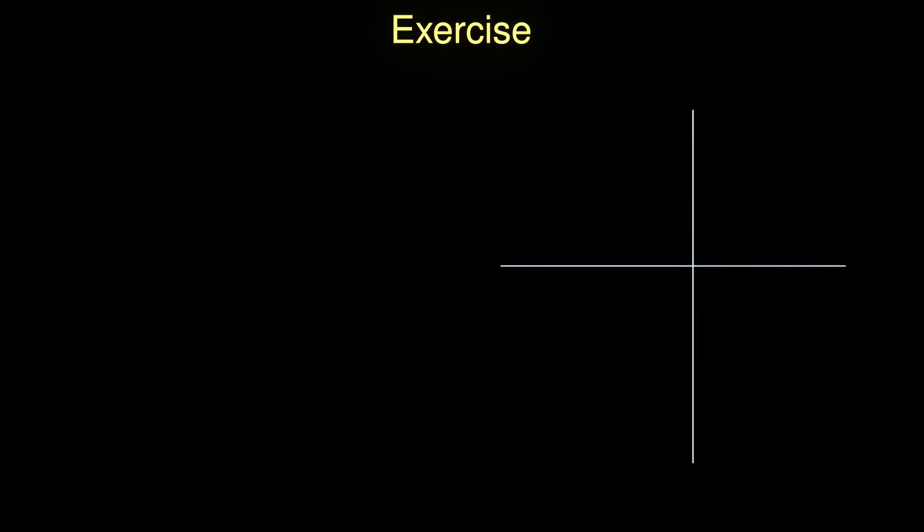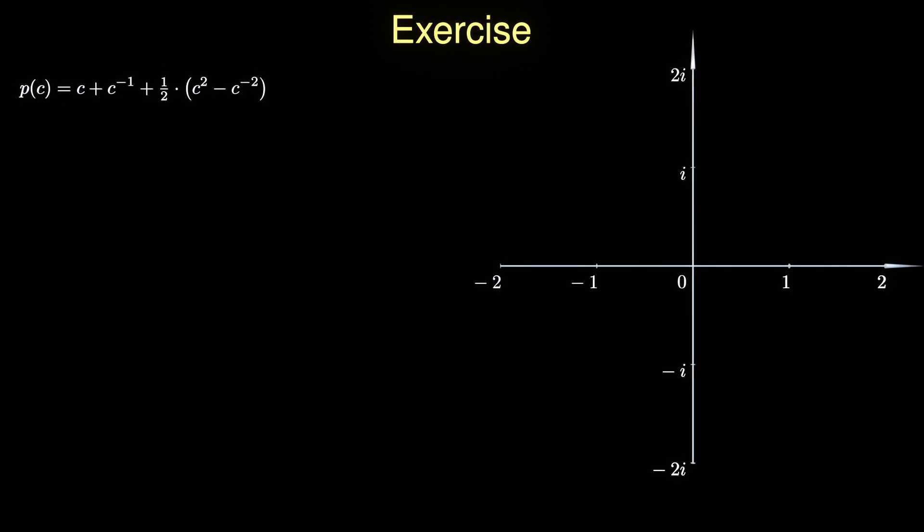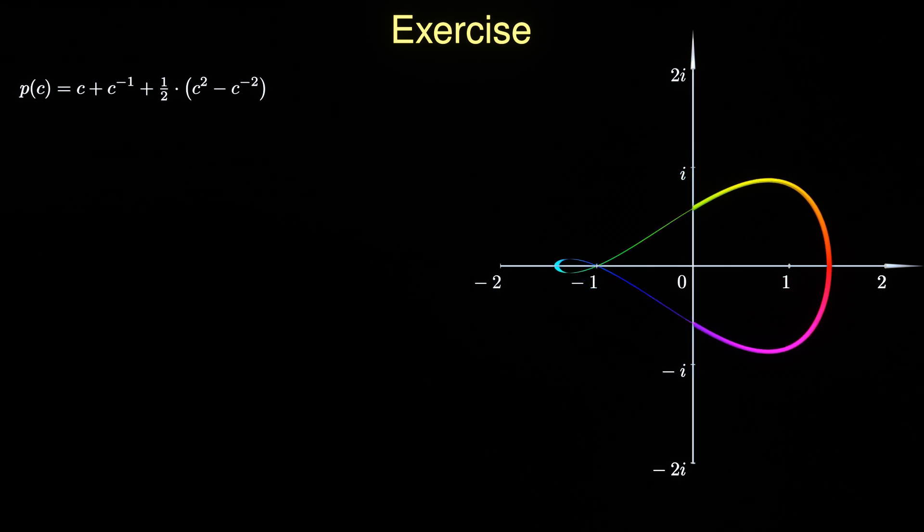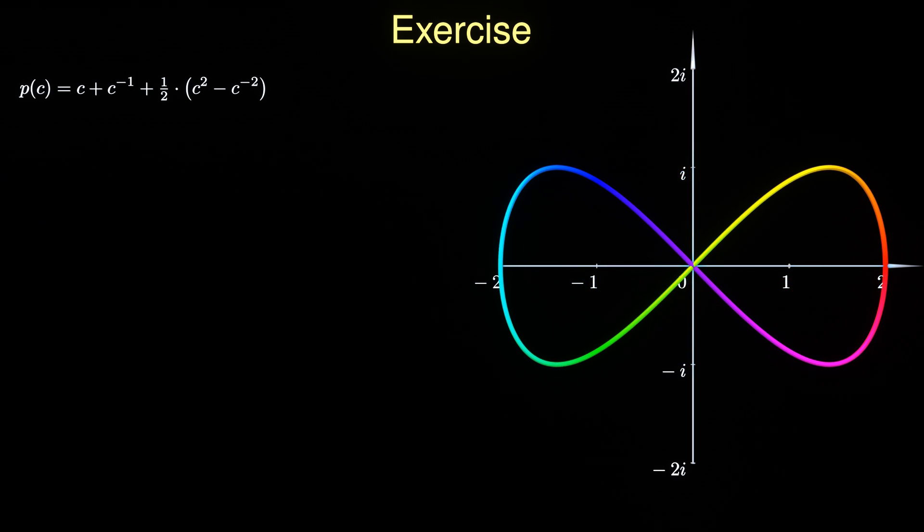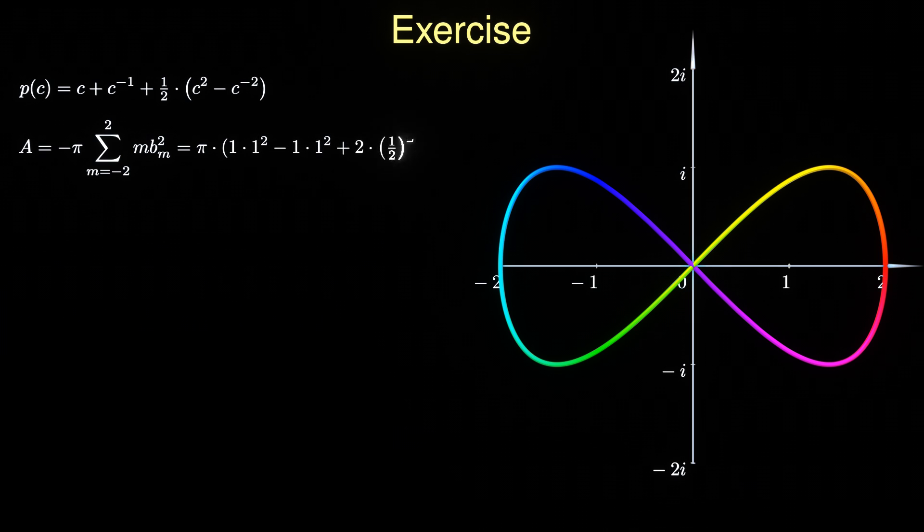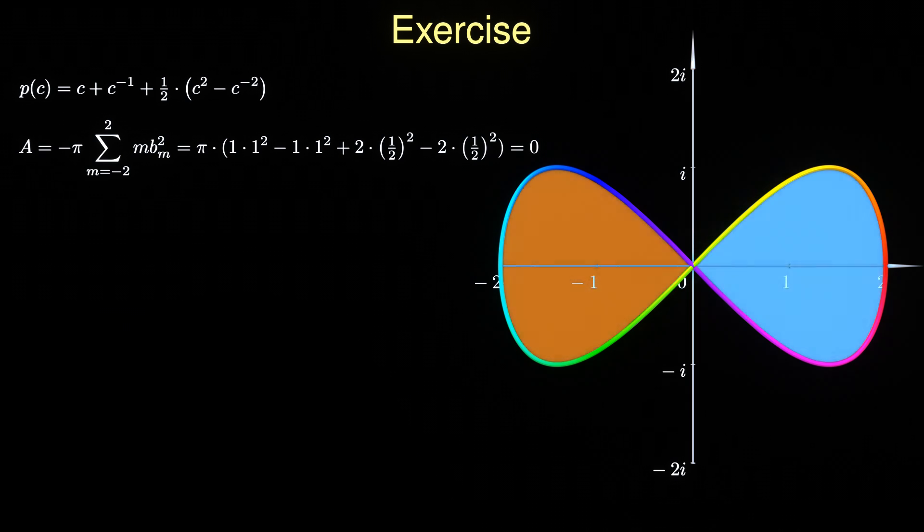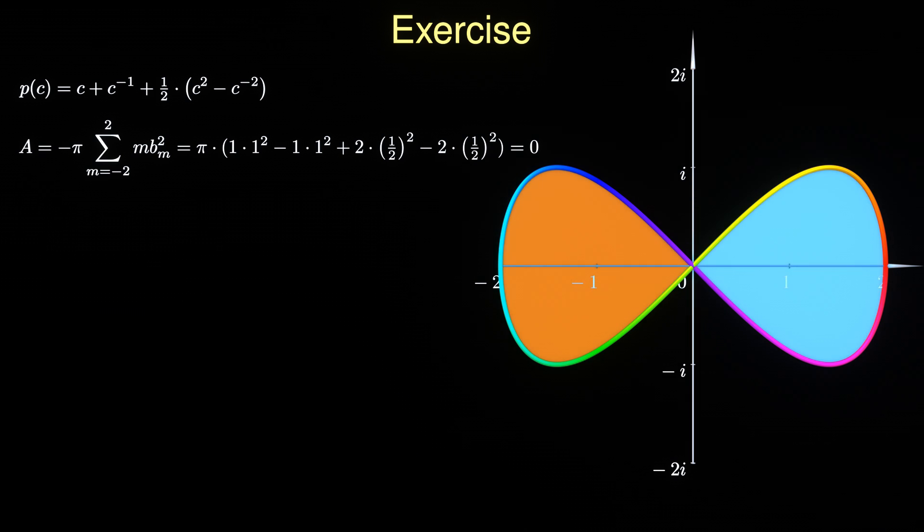If you want to apply Stokes' theorem in a small exercise, try to compute the area enclosed by this curve. Unfortunately, it's not sufficient to just perform the weighted sum. If you apply the last formula and plug in the coefficients and exponents from the polynomial mapping, you end up with 0. This is reasonable because the left and right area are encircled in opposite directions and therefore cancel each other.